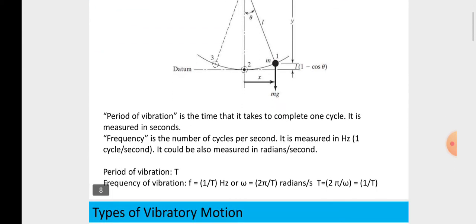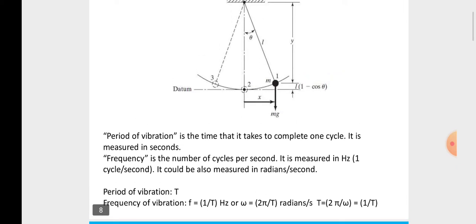Period of vibration is the time that it takes to complete one cycle, measured in seconds. Frequency is number of cycles per second in terms of hertz. Period of vibration time, frequency is equal to 1 upon t. Everybody knows that the frequency is reciprocal of time period.